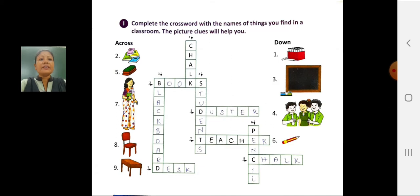First picture is chalk. Then you have to write in the crossword one number, C-H-A-L-K, chalk. Second picture is books. Then write in the crossword two number, B-O-O-K-S, books.